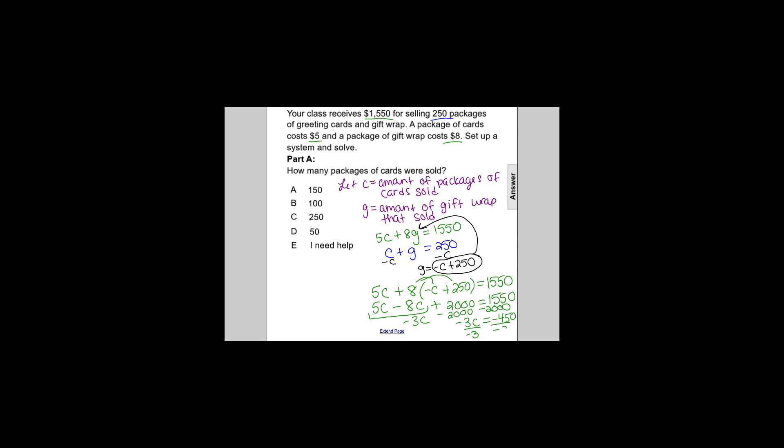And dividing both sides by negative 3, I'm going to come over here now for our conclusion. We get that C equals 150. So if C equals 150, and C represents the amount of packages of cards that were sold, our answer is going to be A, 150.